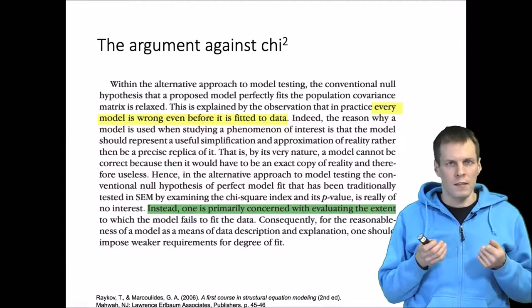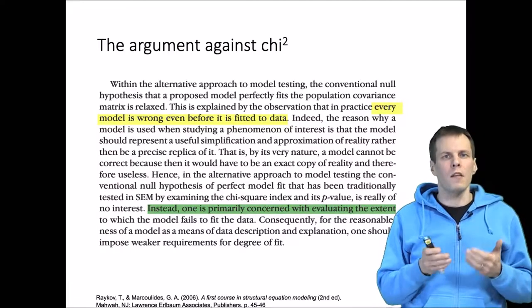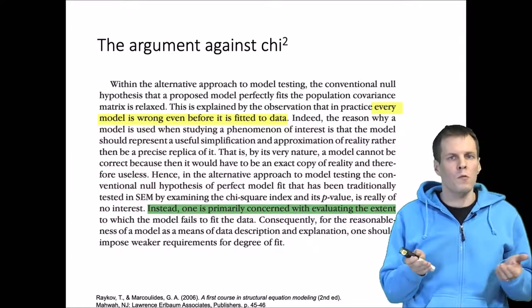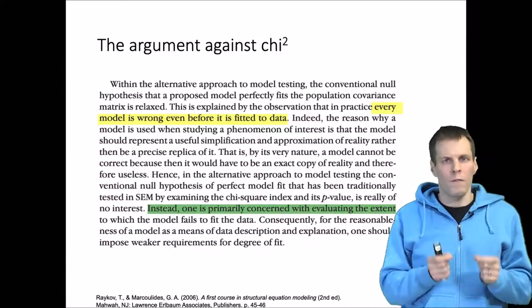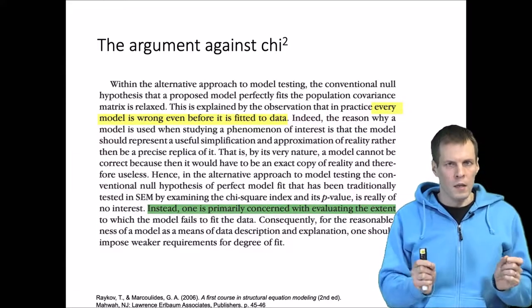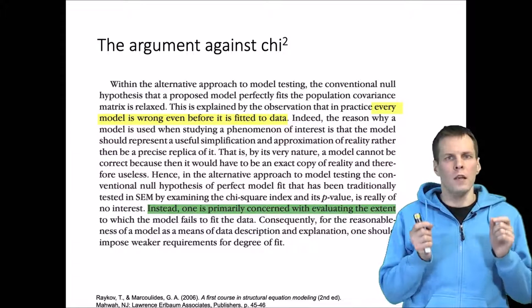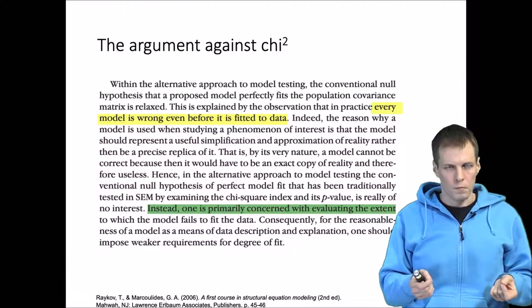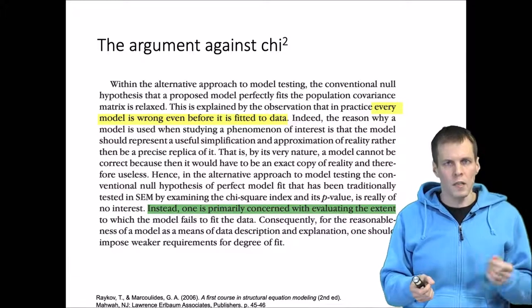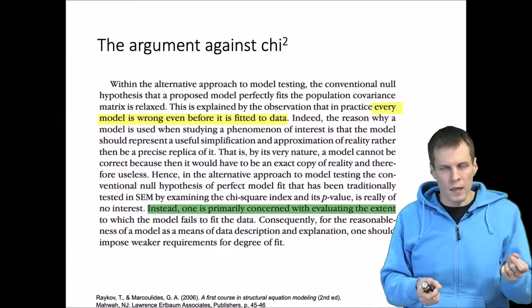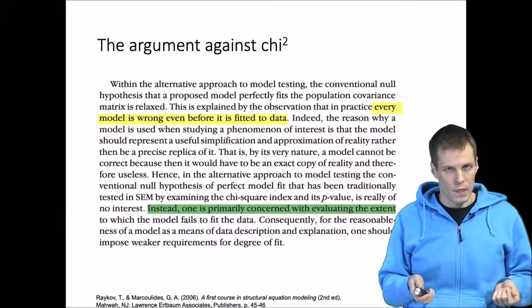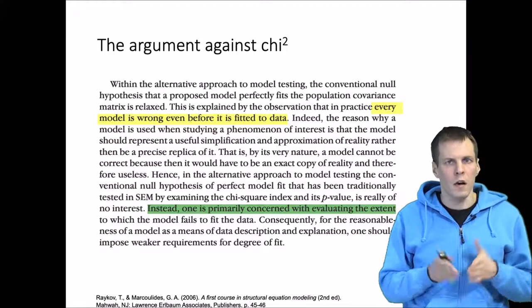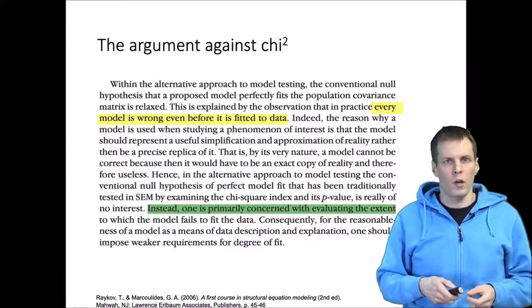If we have a large enough sample size, small discrepancies like these will be detected by the chi-square. The argument further goes that instead of testing if the model fits the data exactly, we are more interested in the degree of misfit. So the chi-square tells us the model is not exactly correct, but we want to understand whether it is incorrect in a way that causes problems for our inference. This is the argument against the chi-square and for the alternative fit indices.